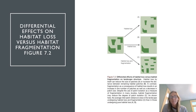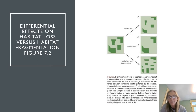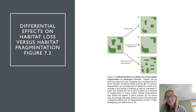There are four main effects of habitat loss versus fragmentation. We see a reduction in the total amount of habitat in the landscape, often an increase in the total number of remaining habitat patches, a decrease in the size of remaining habitat patches, and an increase in patch isolation.